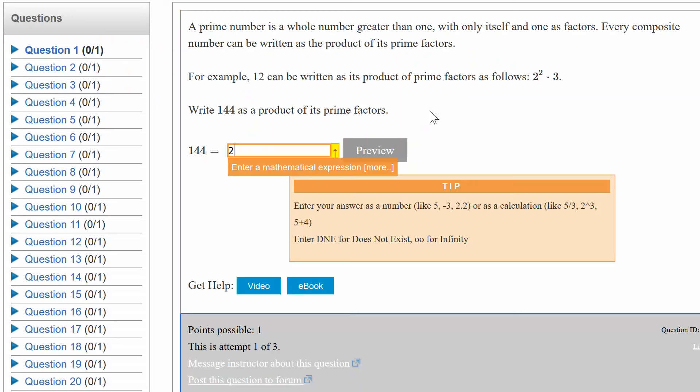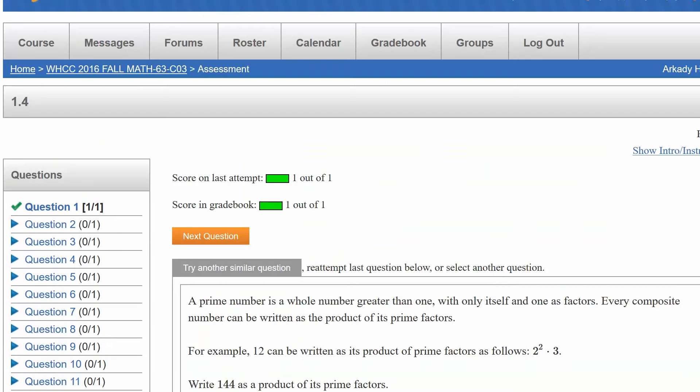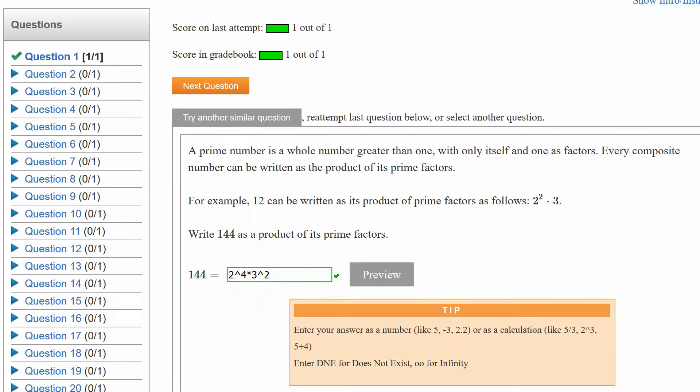So we're going to say 2 to the exponent of 4 times, basically that asterisk key right there, 3 to the 2nd power, and let's see if I'm correct. Now you can preview this here. I suggest you always preview this. Notice the asterisk key does come in as a multiplication marker. Let me click Submit and see what happens. Cool, I got it right.